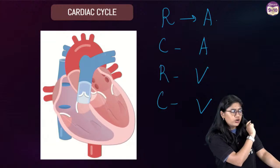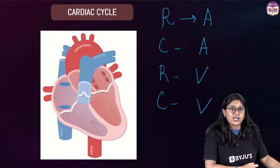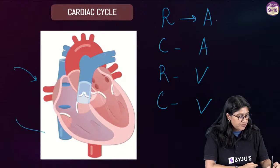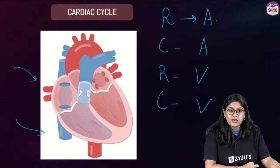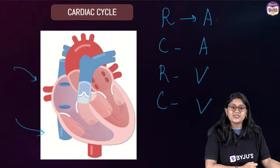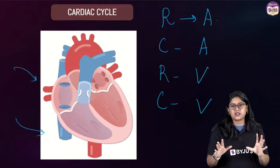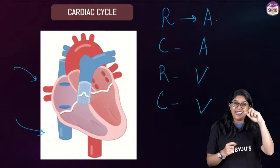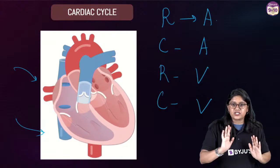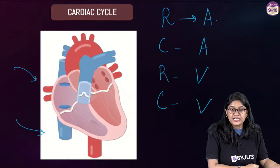The upper chambers are called atria and the lower chambers are called ventricles. When the atria are relaxed and getting blood, the ventricles are making sure everything is functioning properly. It's happening simultaneously — the heart does not wait.